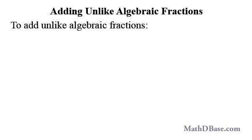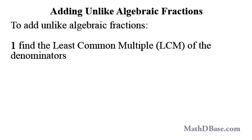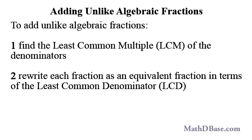To add unlike algebraic fractions, first find the least common multiple, LCM, of the denominators. Rewrite each fraction as an equivalent fraction in terms of the least common denominator, LCD, and then combine the now like algebraic fractions as we did earlier.